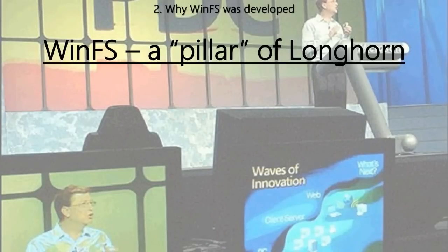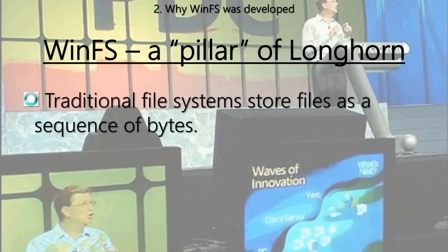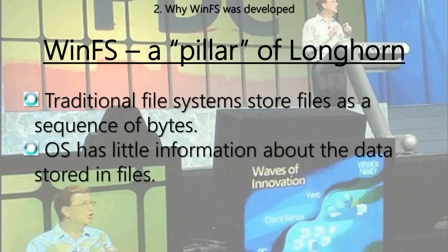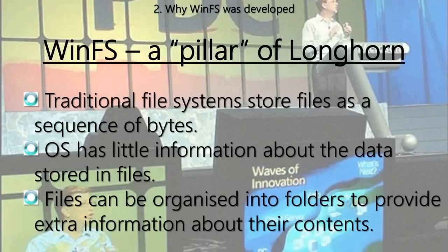The reason WinFS was so important to Longhorn was the problems that traditional file systems have. Traditional file systems like NTFS store files basically as a sequence of bytes, and Windows itself doesn't really know much about what sort of data is in those files — it only knows what the files are called and what the file type is. Files are organized into folders, but that still doesn't give a very clear picture of the data actually in the files.